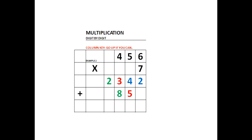Notice the individual products: 42, 35, and 28. The 2 is in the 1's column, the 5 is in the 10's column, and the 8 is in the 100's column. So we have to go over one column to the left each time we start a new product.